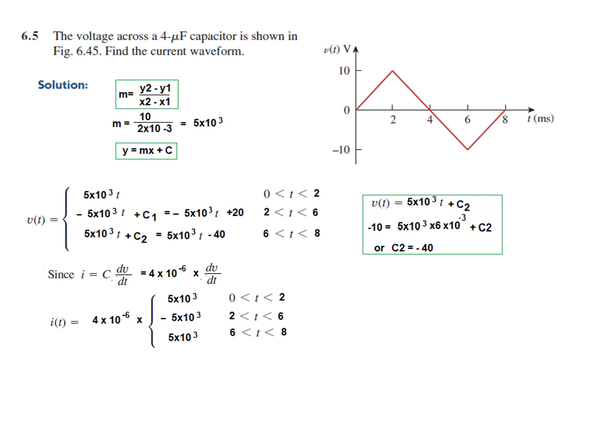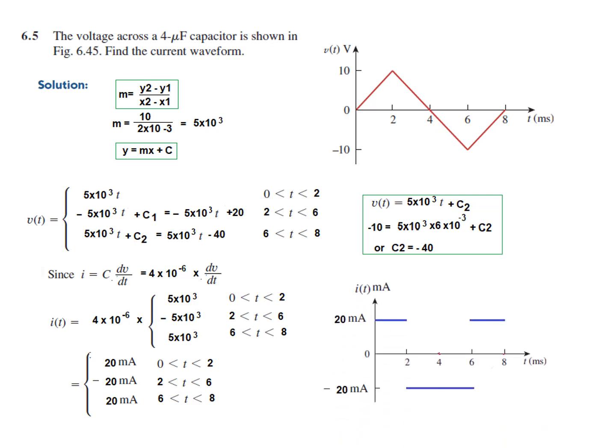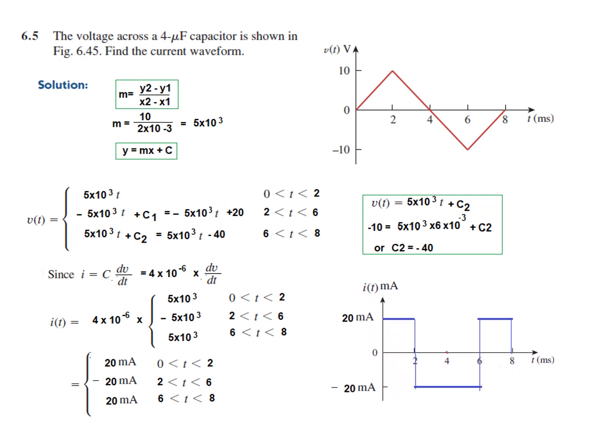Now multiplying: 4 × 10⁻⁶ × 5 × 10³ = 20 × 10⁻³ = 20 mA. So the current is +20 mA for 0 to 2 ms, −20 mA for 2 to 6 ms, and +20 mA for 6 to 8 ms. We can now plot: a constant +20 mA, then −20 mA, then +20 mA. To beautify the plot, you can add vertical lines at the transitions. This is how you plot the current waveform.